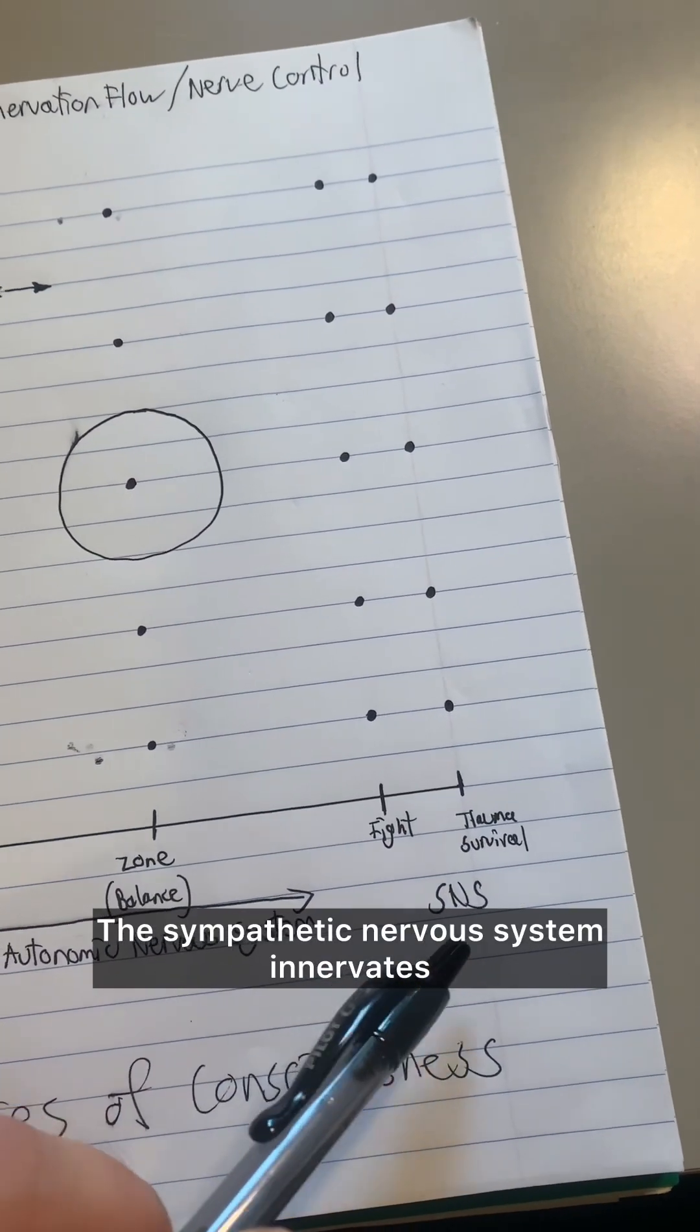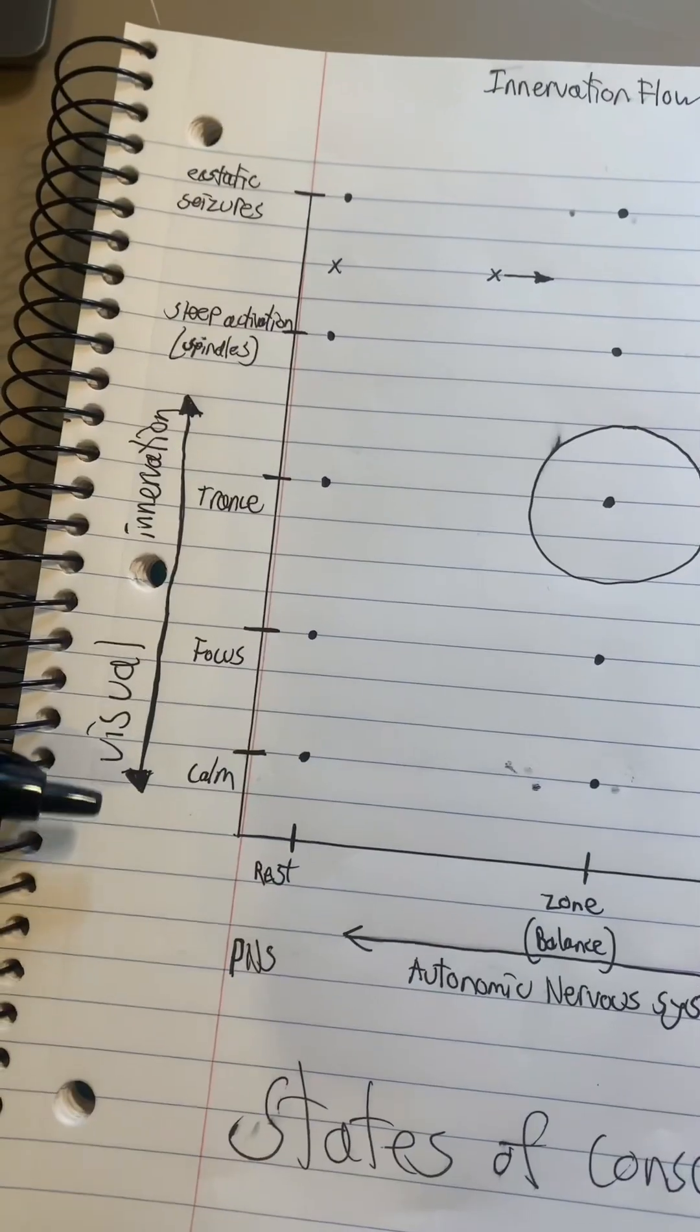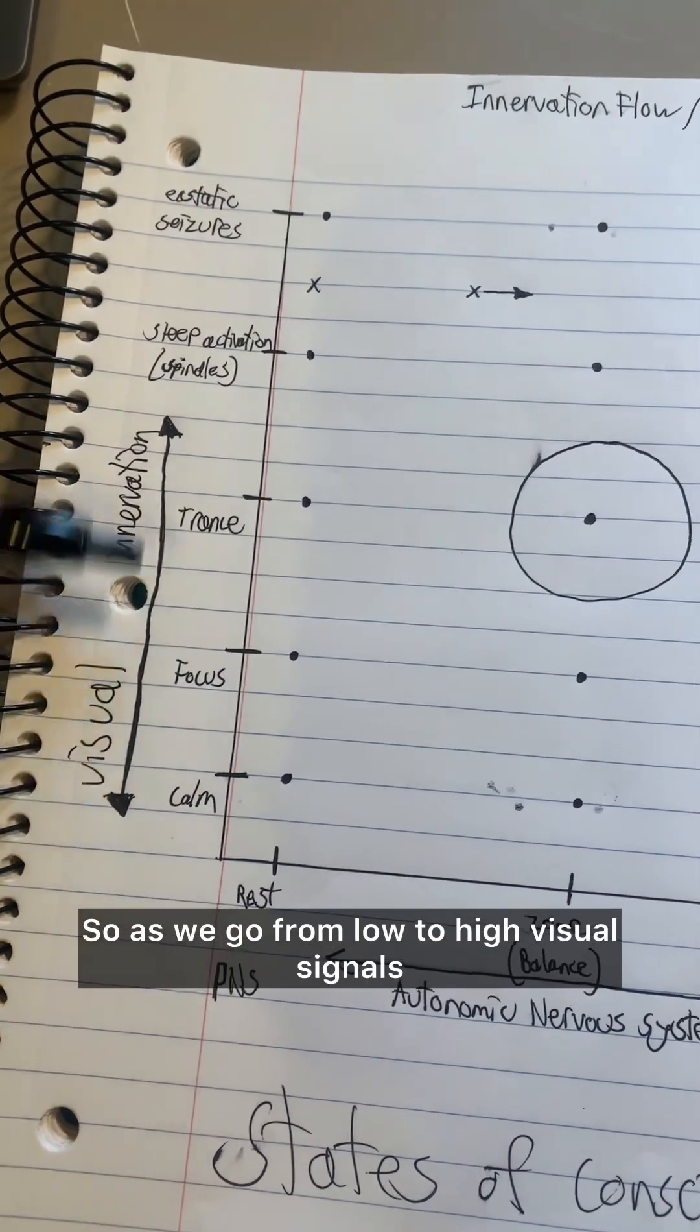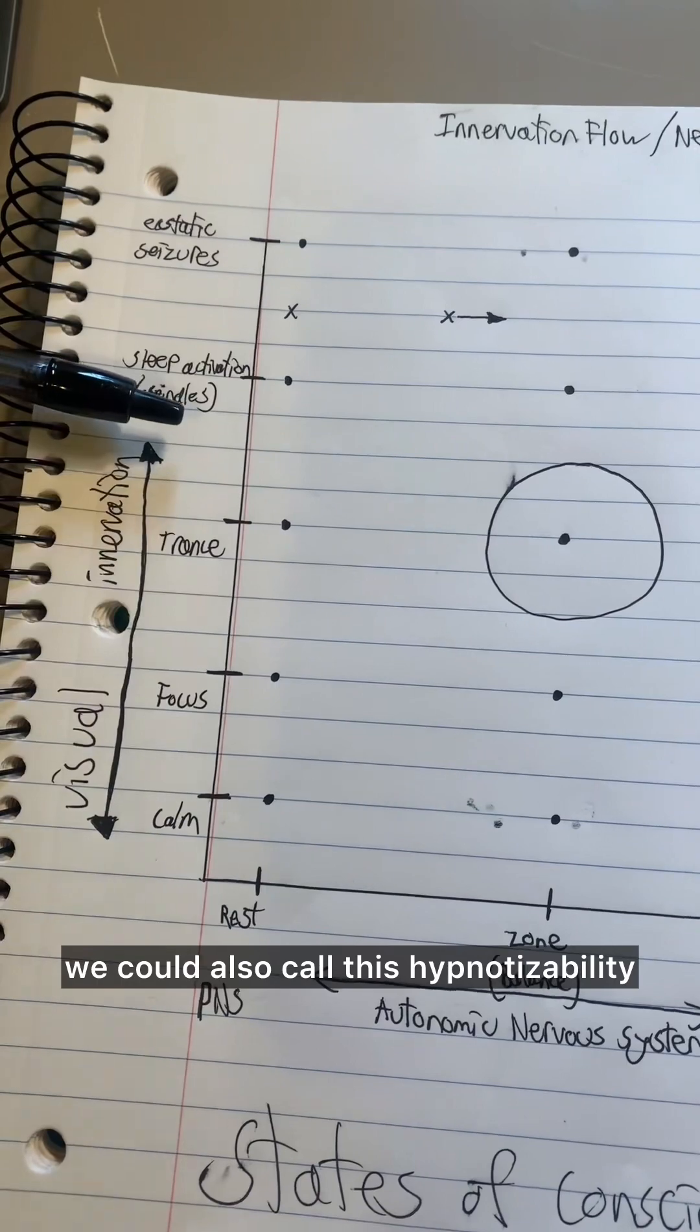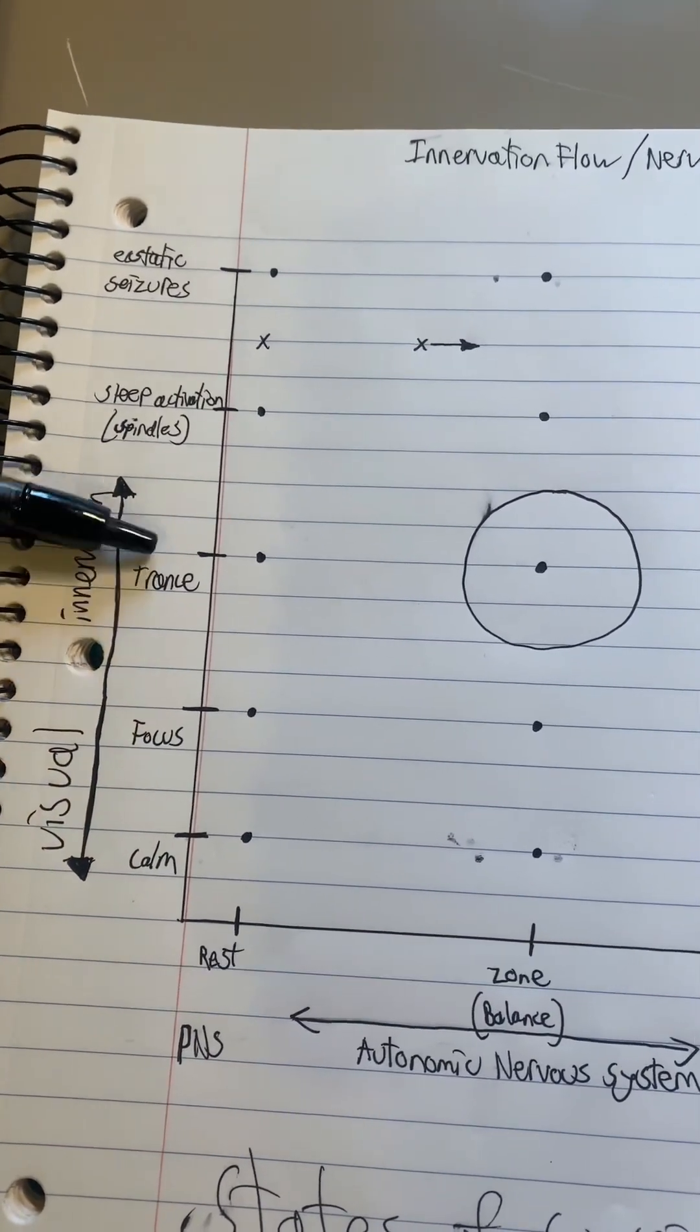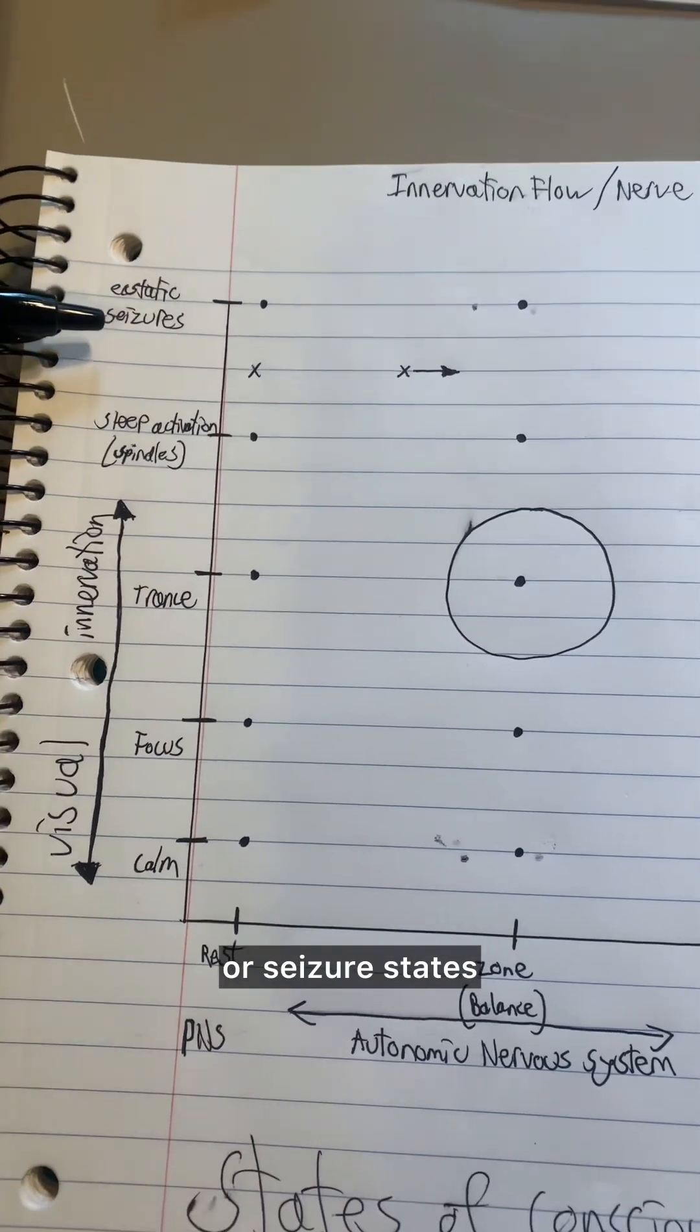The sympathetic nervous system innervates nearly every tissue and organ in the body. On the y-axis here, we have visual innervation. So as we go from low to high visual signals, we could also call this hypnotizability. You go from calm to focus to trance to sleep activation to the ecstatic states or seizure states.